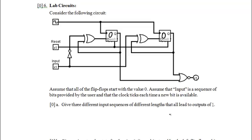Give three different input sequences of different lengths that all lead to outputs of one. To start understanding the circuit: nothing was said about the reset input, but it leads into the zero inputs of the D flip-flop, so when someone switches reset, these return to state zero-zero. That's probably why we were told to assume the flip-flops start with value zero-zero — that's our start state.